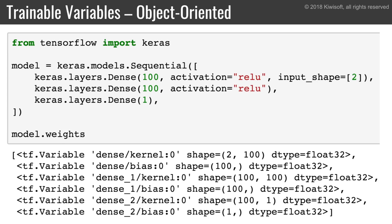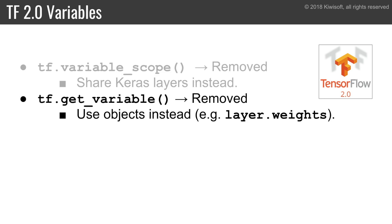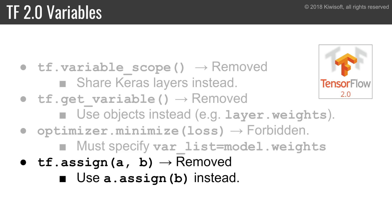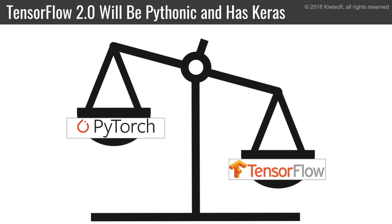Let's summarize the improvements in TensorFlow 2.0 regarding variables. Variable scopes are removed — you must handle variable sharing in an object-oriented way, such as using the same Keras layer as many times as needed. tf.get_variable is also removed; you should use objects to handle the variables, such as Keras layers and models. You must now pass the list of variables to train to the optimizer's minimize method. tf.assign will be removed — you should use a.assign instead. And it will soon be possible to perform item assignment using the assign method on a variable slice.